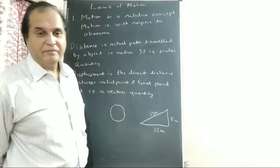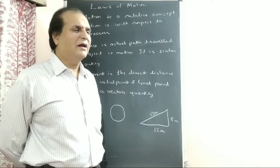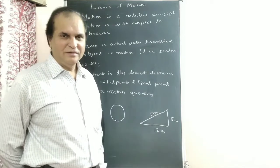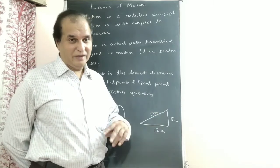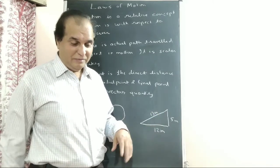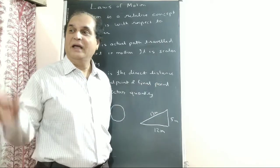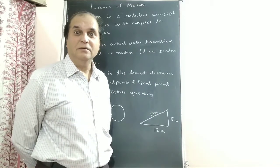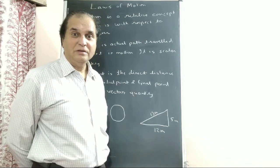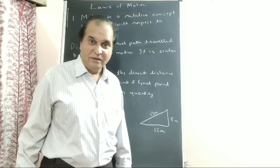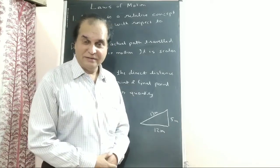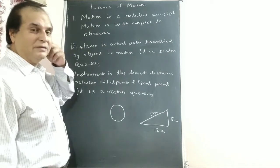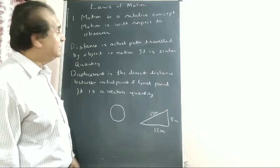Suppose two friends, A and B. They are sitting in a car and going, just relaxing. Will A feel that B is in motion? No. B will also not feel that A is in motion. But there is one more friend who saw them from the road — she is stationary standing on the road, and she sees A and B going through the car. So A and B are in motion from her perspective.